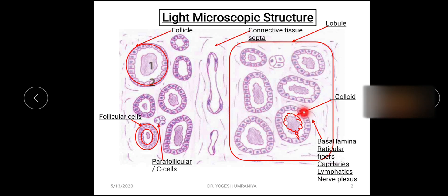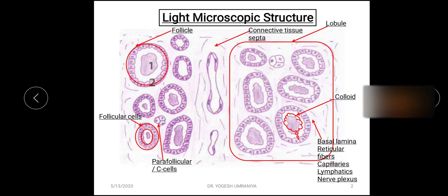Within this lobule there is an aggregation of follicular cells, forming the structural as well as functional unit of the thyroid gland, termed the follicle. Within the follicle, in the center there is a cavity or lumen, and on the peripheral aspect there is a wall formed by the follicular cells.